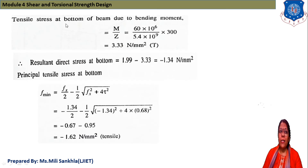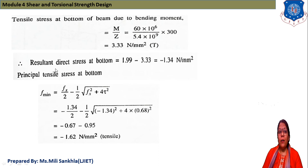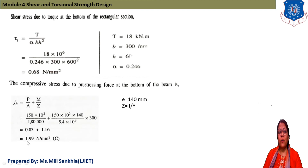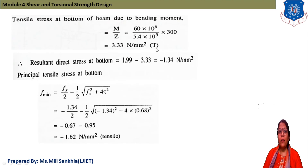Tensile stress at the bottom of the beam due to bending moment: M/Z = 16 × 10⁶ / Z = 3.3 N/mm². Resultant direct stress at bottom = 1.99 − 3.3. Since 1.99 is compressive and 3.3 is tensile (negative), the net answer is −1.34 N/mm².